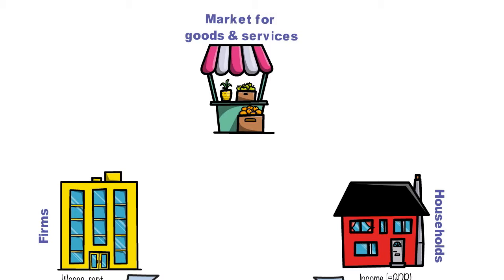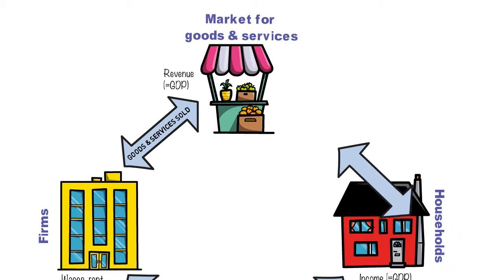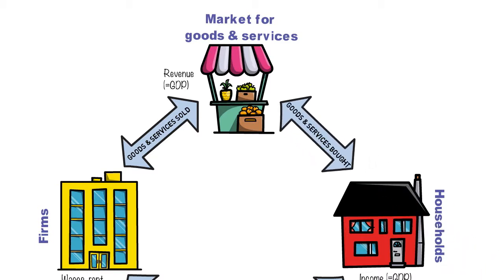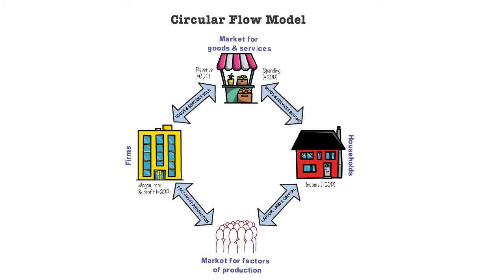We have the market for goods and services, where we move from factors of production to the actual products and services produced. Firms will produce their goods and services and sell them in these markets to households, generating a revenue which is another measure of the size of economic activity — the GDP. From this market for goods and services, households are going to spend; goods and services are bought and sold, and all this spending added together will give you GDP as well.